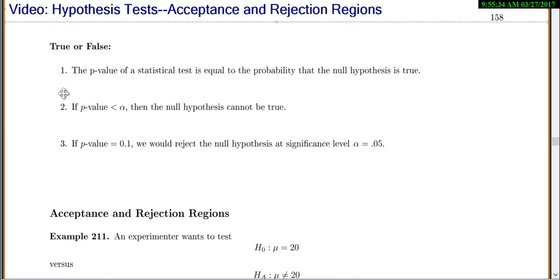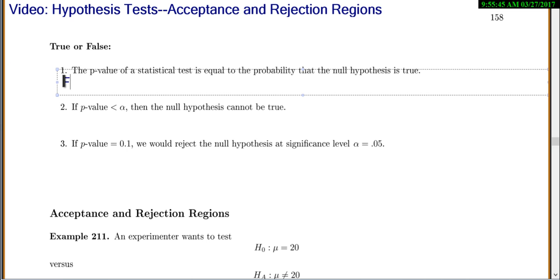So true or false? First, the p-value of a statistical test is equal to the probability that the null hypothesis is true. Well, as soon as I see this, I think it has to be false. And what are some reasons why? First of all, if you remember,